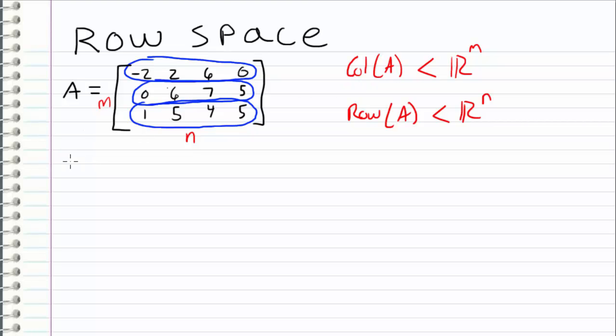Just like in the case of column space, the row space is equal to the span of the rows of our matrix. In this particular example, we have a row space which is equal to the span of the vectors: